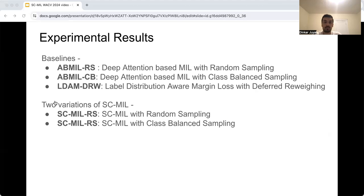We trained three baseline models, an attention MIL model with random sampling called ABMIL-RS, and class balance sampling ABMIL-CB, and our version using label distribution aware margin loss with deferred reweighting, LDAM-DRW, that has previously shown to be successful for addressing label imbalance in single instance classification. We trained SCMIL with random and class balance sampling.